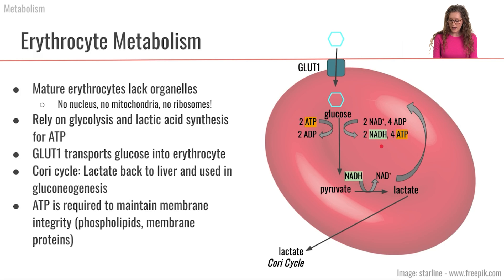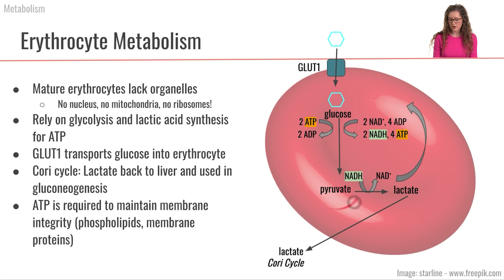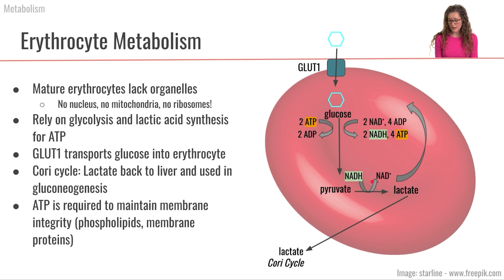To continue running glycolysis, we need to take the reduced NADH and oxidize it back to NAD+. So pyruvate, the end product of glycolysis, undergoes a chemical reaction to be converted into lactate. In that process, NADH is oxidized back to NAD+, making it available to run glycolysis again and generate that small amount of ATP.